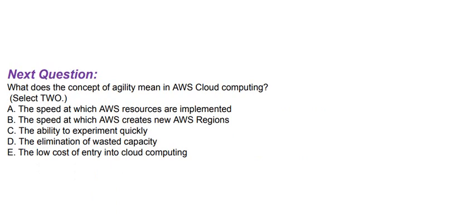Next question: What does the concept of agility mean in AWS cloud computing? Select two options. Option A: The speed at which AWS resources are implemented. Option B: The speed at which AWS creates new AWS regions. Option C: The ability to experiment quickly. Option D: The elimination of wasted capacity. Option E: The low cost of entry into cloud computing.